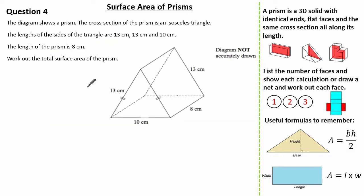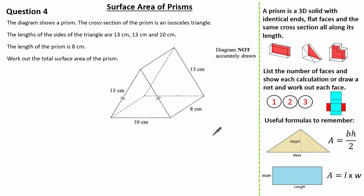Now let's look at a slightly harder question. The diagram shows a prism whose cross-section is an isosceles triangle with side lengths 13 cm, 13 cm, and 10 cm, and a length of 8 cm. We're asked to work out the total surface area of the prism. See if you can give it a go.